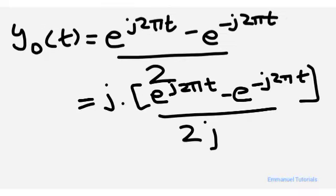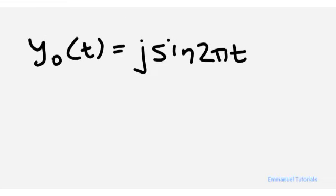For the odd part, it is [e^(j2πt) - e^(-j2πt)] / 2. If you multiply numerator and denominator by j, you get j·[e^(j2πt) - e^(-j2πt)] / 2j, which is equivalent to j·sin(2πt), since θ = 2πt. So we conclude that the odd component of y(t) is j·sin(2πt), because we multiplied by j to get the sine formula.